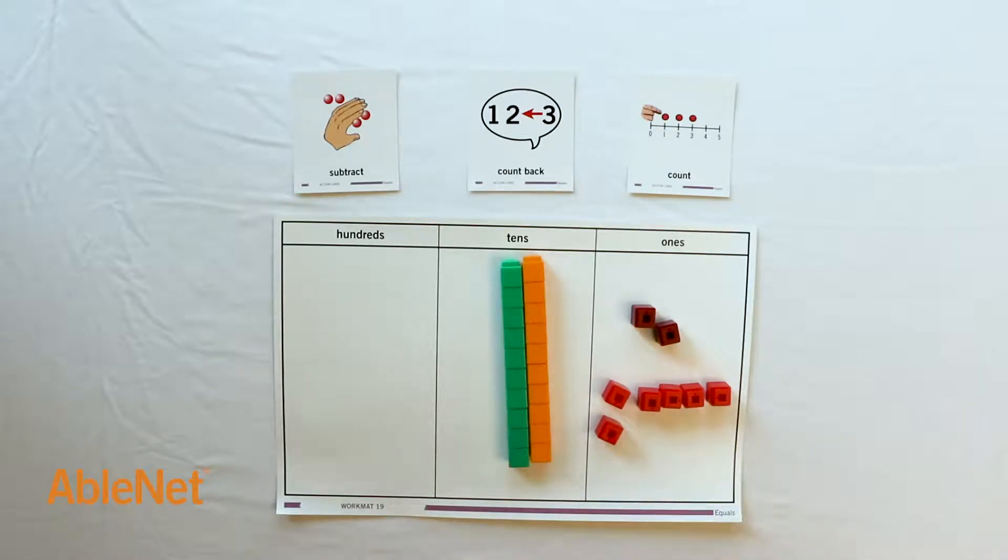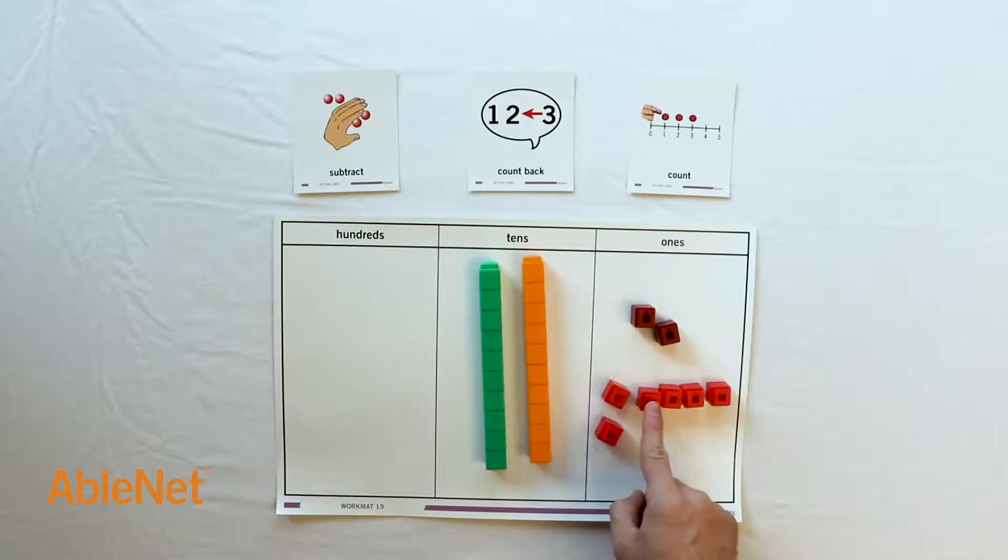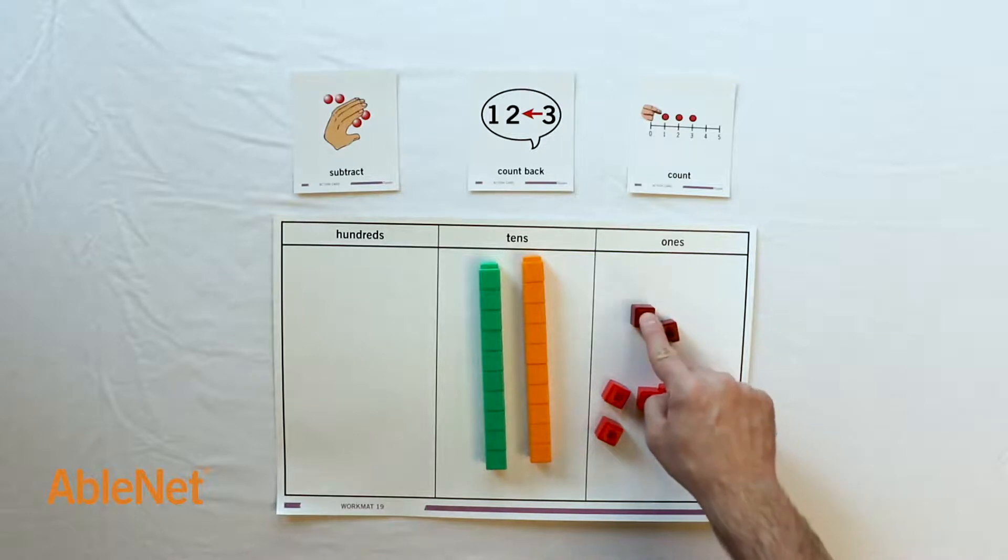Next, I will count the remaining amount. 10, 20, 21, 22, 23, 24, 25, 26, 27, 28. The pants cost $28.